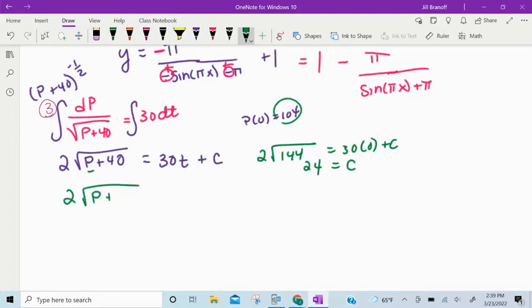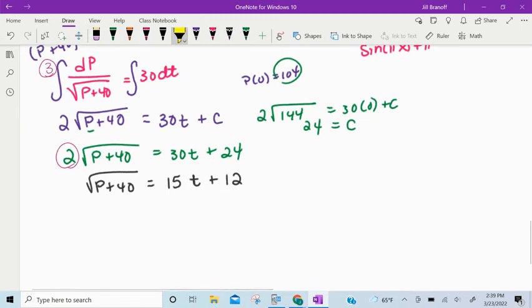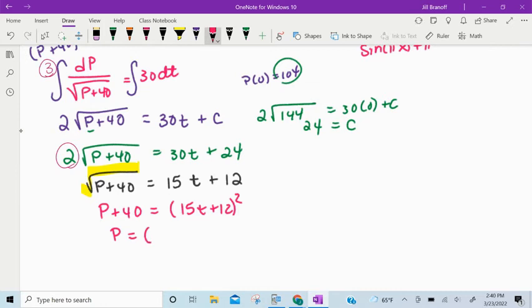Two roots of p plus 40 equals 30 times t plus 24. To solve this for p, let's divide by this 2. Root p plus 40 equals 15t plus 12. To get rid of the square root, you want to square both sides. So p plus 40 is the quantity 15t plus 12 with a square. And then finally, p is the quantity 15t plus 12 squared minus 40. So that's number 3.